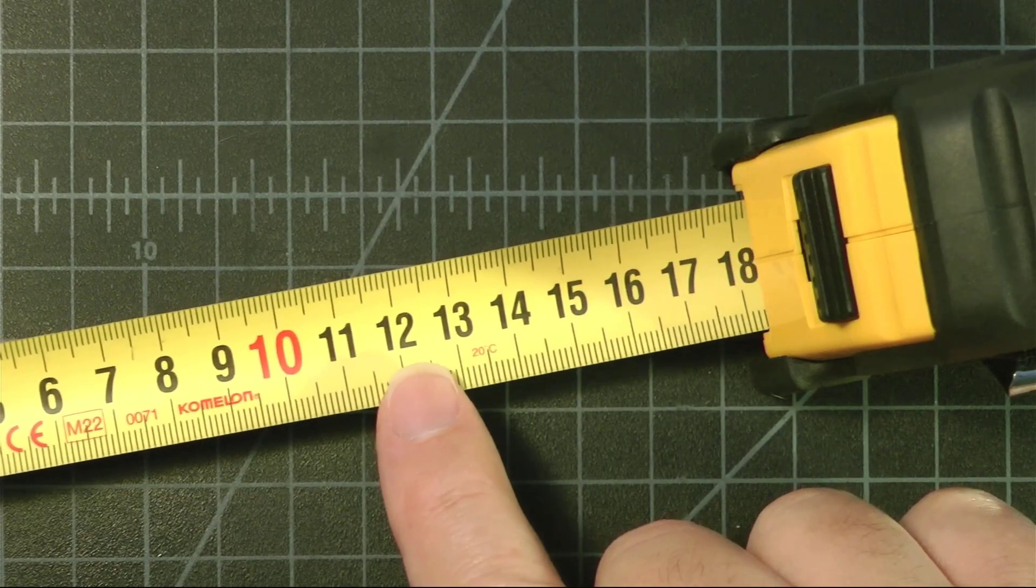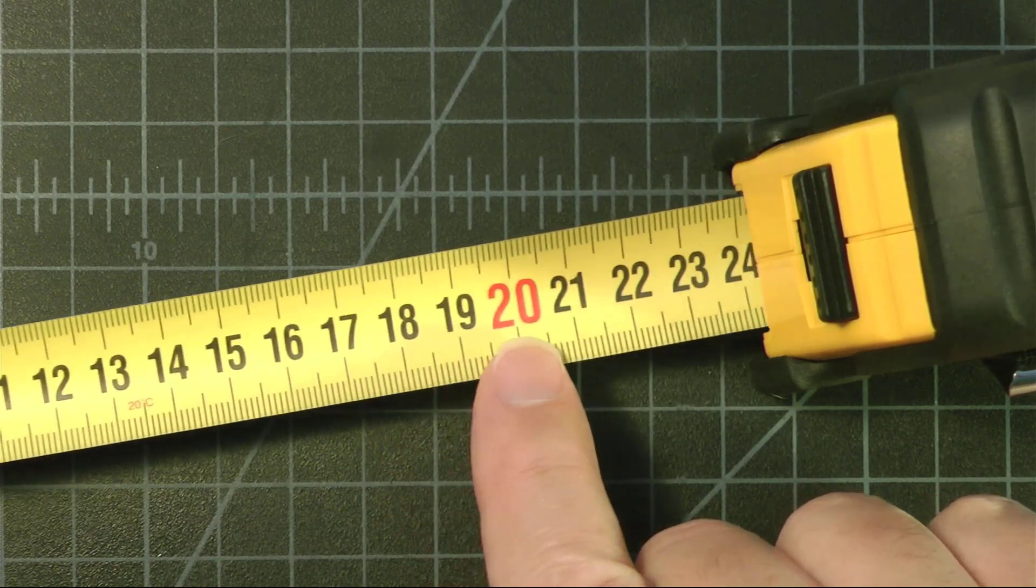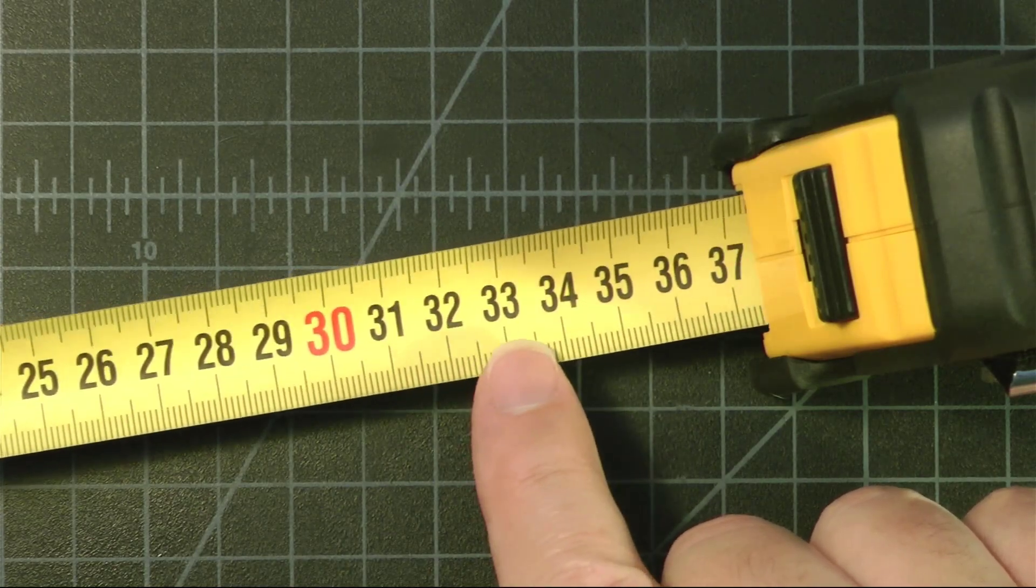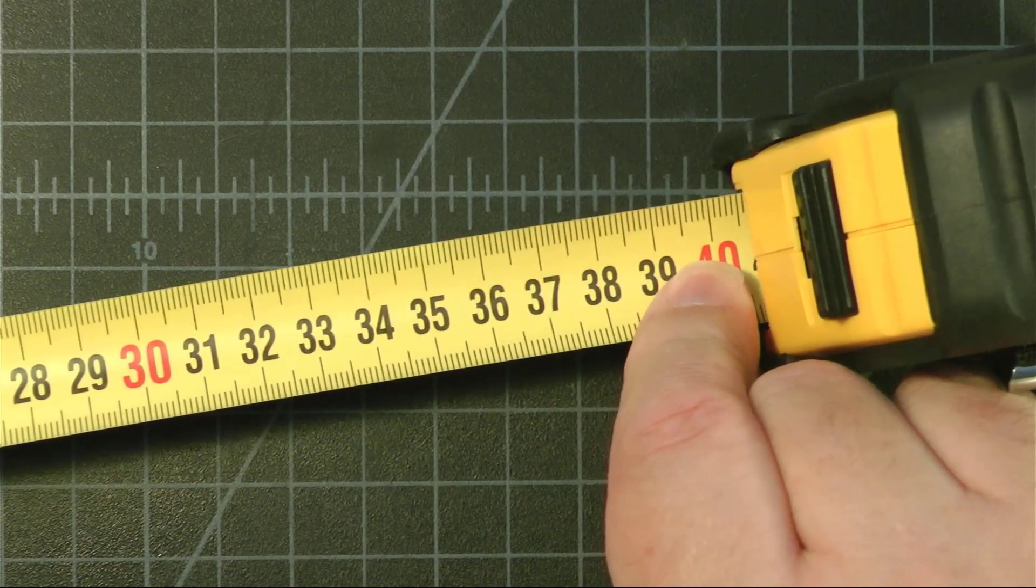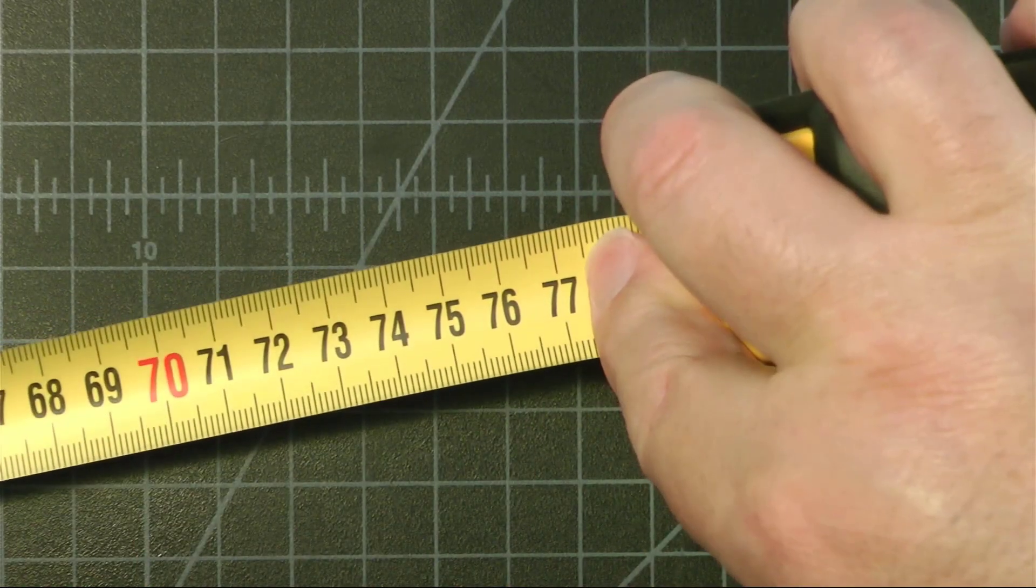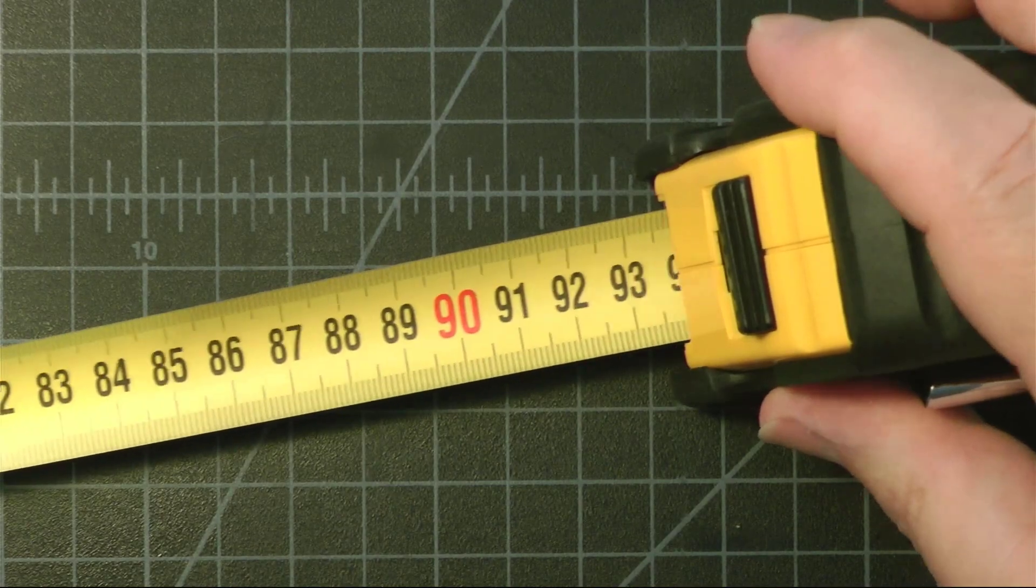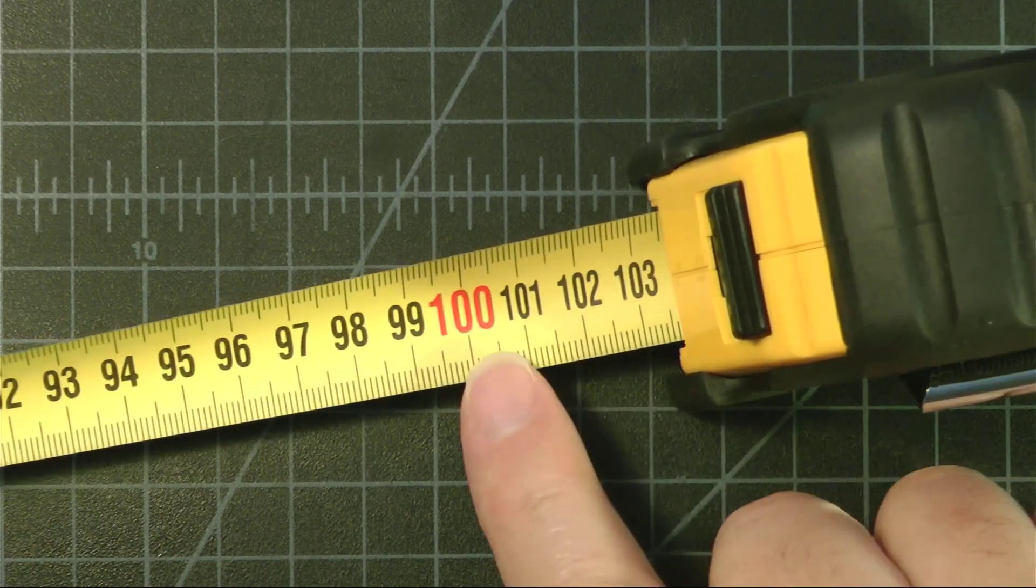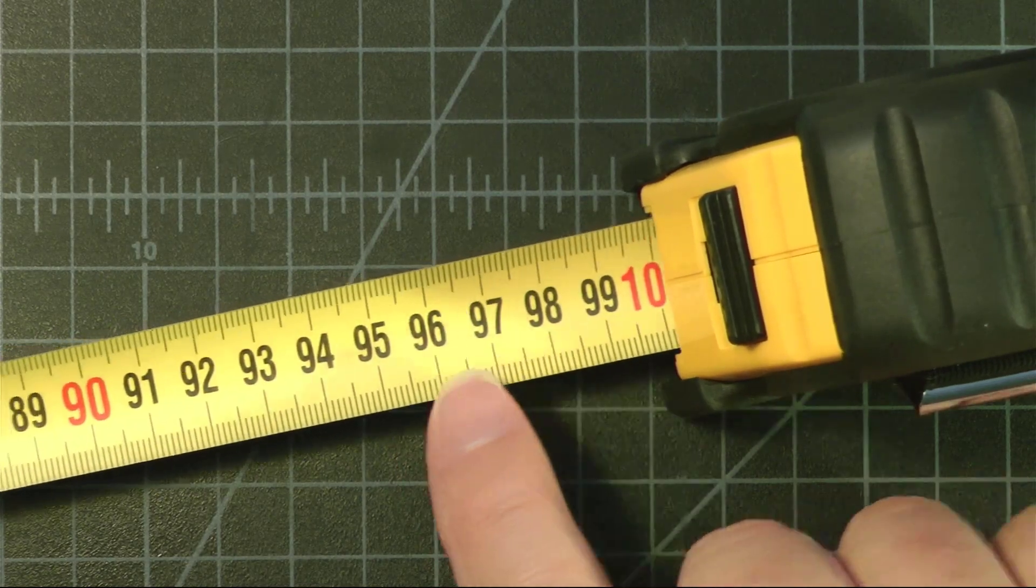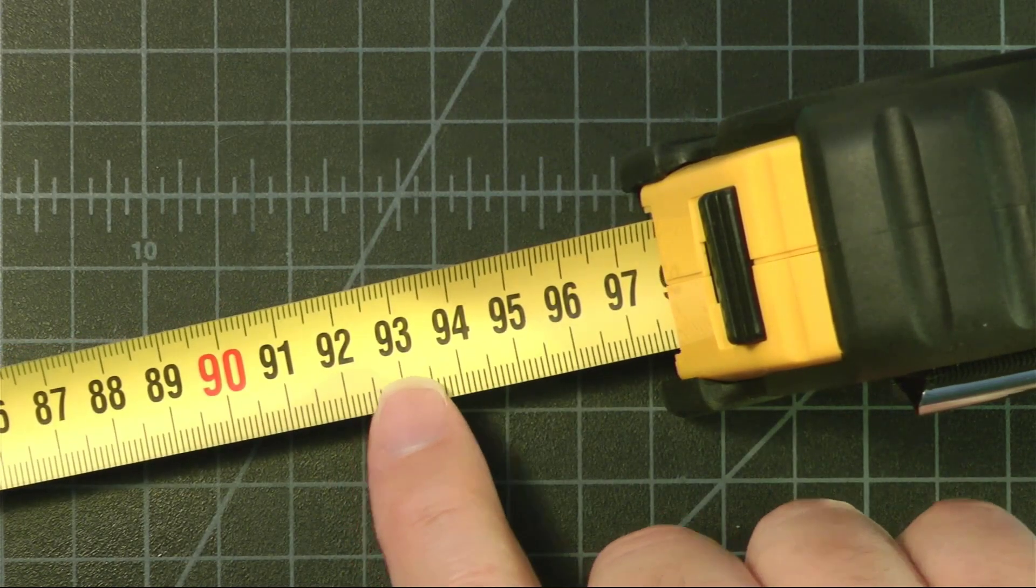We then go further and here's a 20 and a 30 and so on. If we keep pulling this out we have 50, 60, 80, 90, and 100. There are 100 centimeters in a meter.